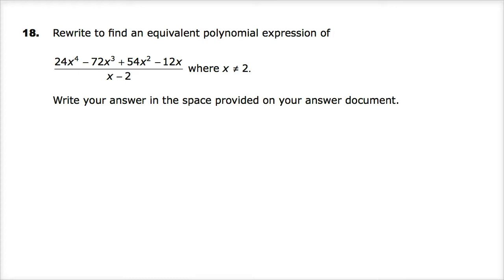Why does that matter? Well, because you can't have 0 in the denominator. So the idea is if you have 2 here, 2 minus 2 would give you that, which would make it a restriction in the domain. You can't divide by 0. Write your answer in the space provided in the answer document.